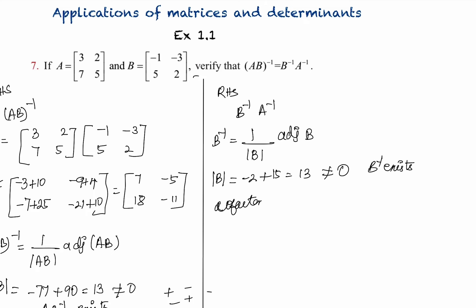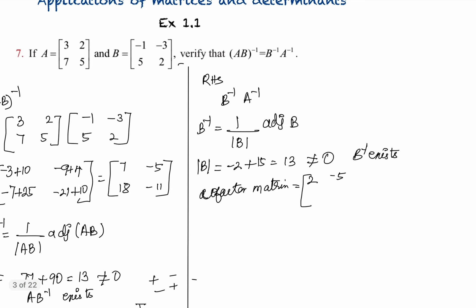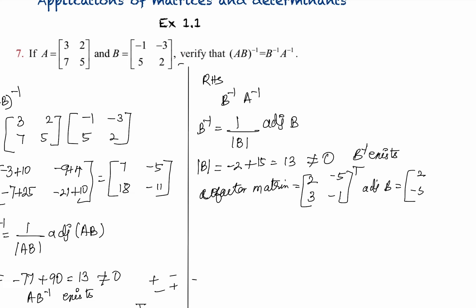Adjoint of B: co-factor matrix of B. The co-factors are: position (1,1) is 2, position (1,2) is -5, position (2,1) is 3, position (2,2) is -1. Transpose gives adjoint of B as [2, 3; -5, -1]. So B⁻¹ equals 1/13 × [2, 3; -5, -1].